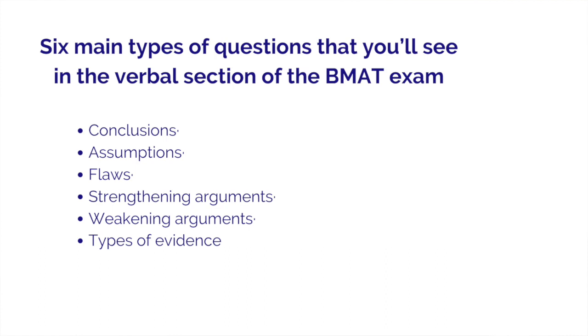There are six question types that you will see in the verbal part of section 1 of the biomedical admissions test. These are questions on: conclusions, assumptions, flaws, strengthening arguments, weakening arguments, and finally types of evidence. In the upcoming videos I'll be going through each of these in turn, covering some theory and practice questions, then dissecting the answers and explaining exactly why you answer the way you do. I'll be releasing these videos weekly so make sure you subscribe and turn on notifications.